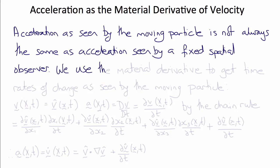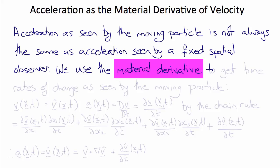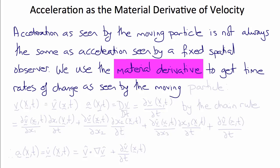To obtain these correct rates of change, we use a quantity called the material derivative, which computes time rates of change as seen by the moving particle in terms of the partial derivatives with respect to time as seen by a fixed spatial or Eulerian observer.